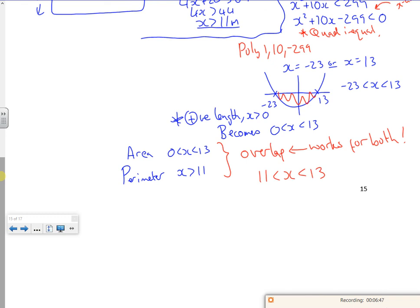So the overlap is 11 is less than x is less than 13. Does that make sense? So the area I can use between 0 and 13, but the perimeter has to be bigger than 11. So overall, the overlap is between 11 and 13.